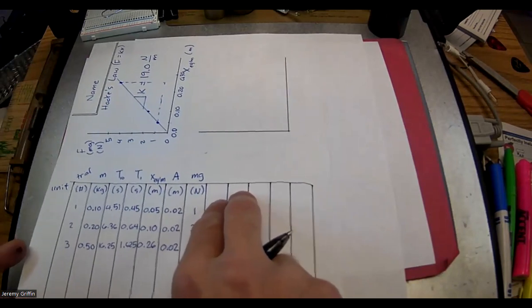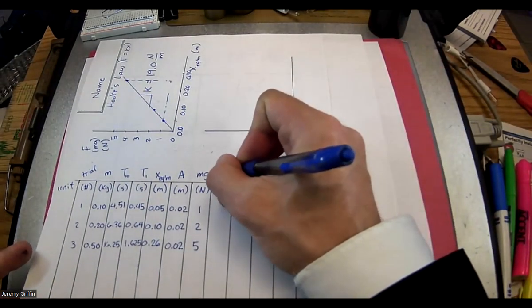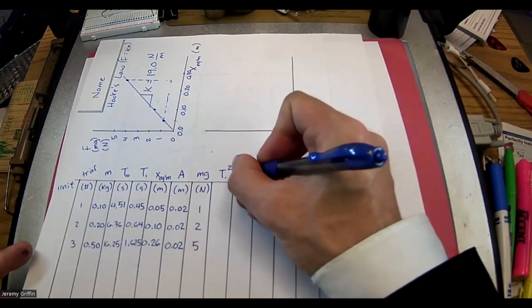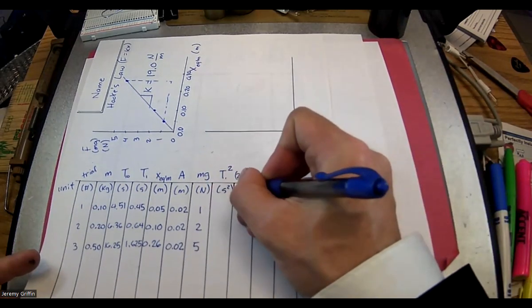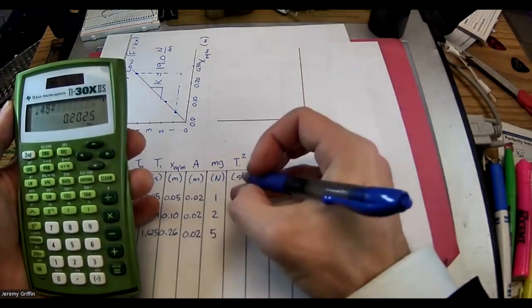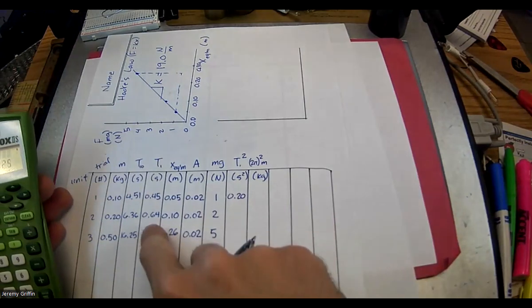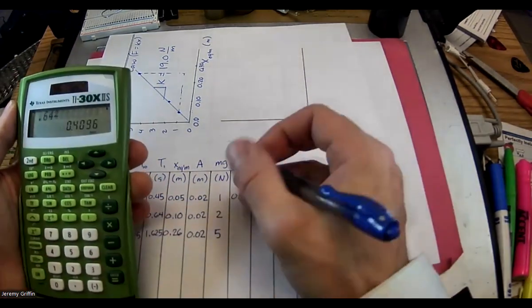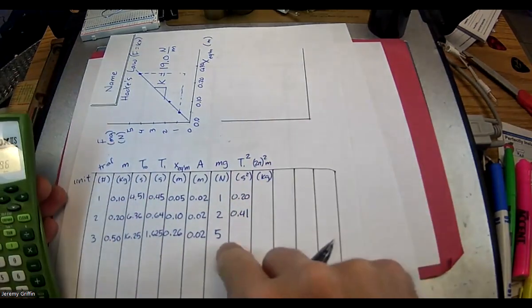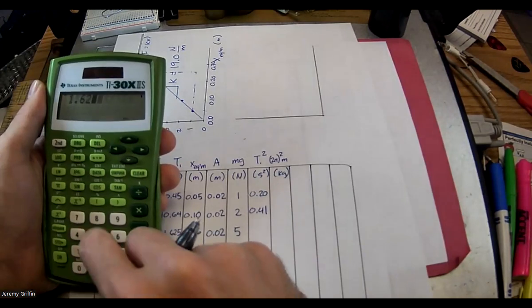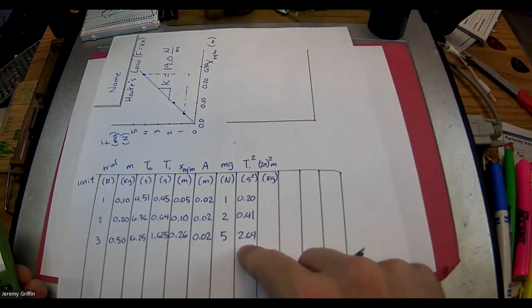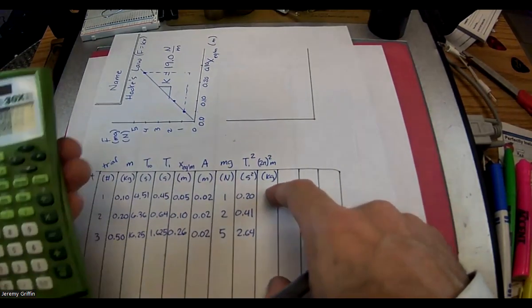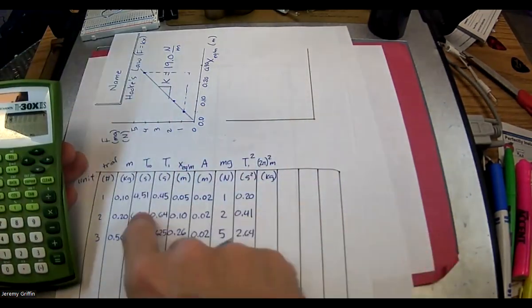That means two new columns: T² in seconds-squared, and (2π)²×mass in kilograms. Let's calculate those values. T² goes up to about 2.64 s², and (2π)²×m goes up to nearly 20.